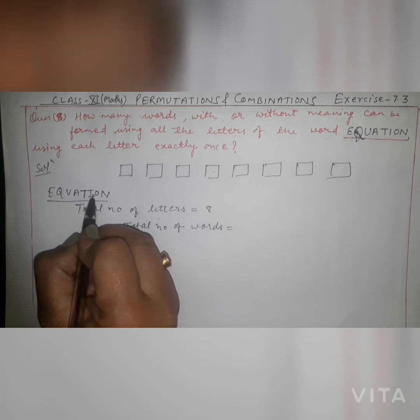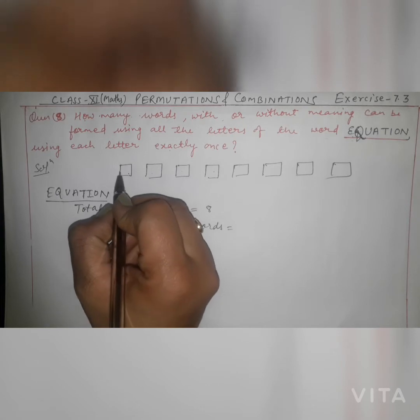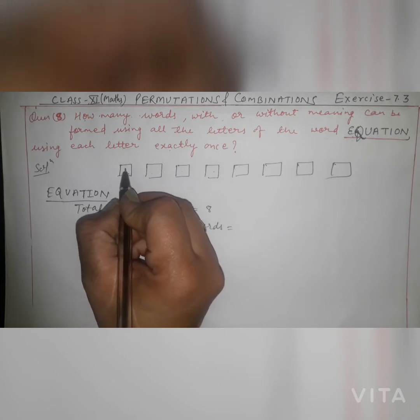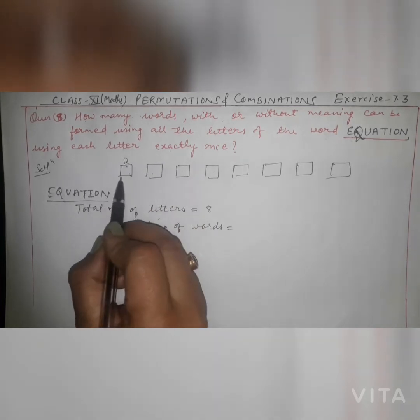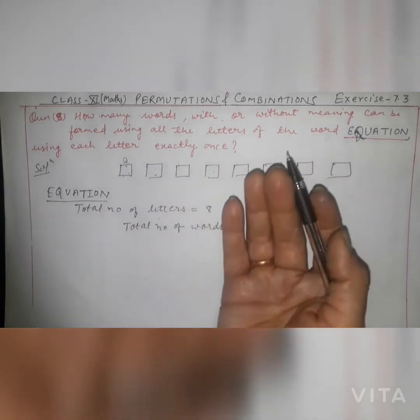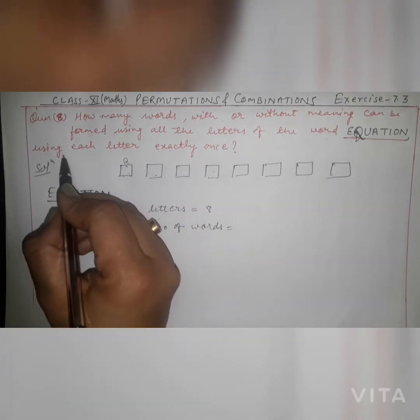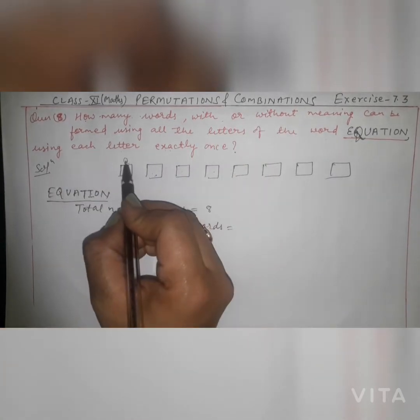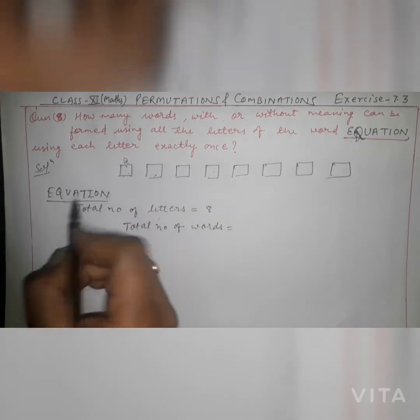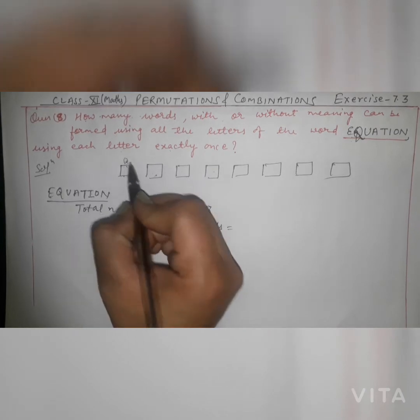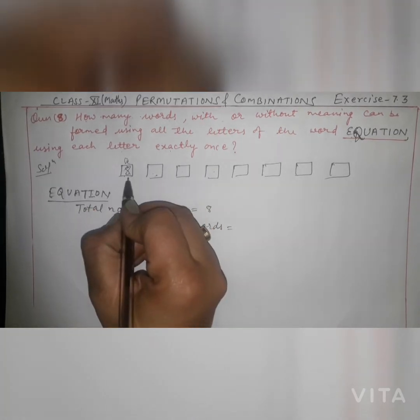T will not appear again, I will not appear again. In the first letter box, suppose I fill in the letter Q. Since we use each letter exactly once, Q will not be repeated. So for the first box, the options are Q, E, U, A, T, I, O, N — that is 8 choices. So the first box can be filled in 8 ways.